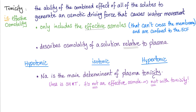What is the main determinant of plasma osmolality and tonicity? The king: sodium. Why? Because it's very numerous — there is a lot of sodium in the extracellular fluid, and osmosis only cares about the number of particles. Urea is not an effective osmol, so it has nothing to do with tonicity — it's an ineffective osmol.